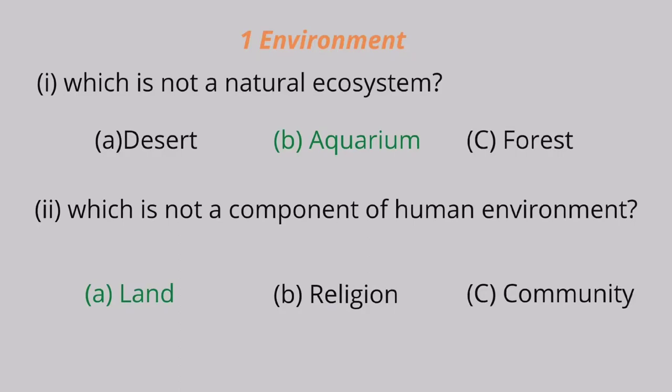Question 2: Which is not a component of human environment? A. Land, B. Religion, C. Community. Land is the correct answer. Land is not a component of human environment.